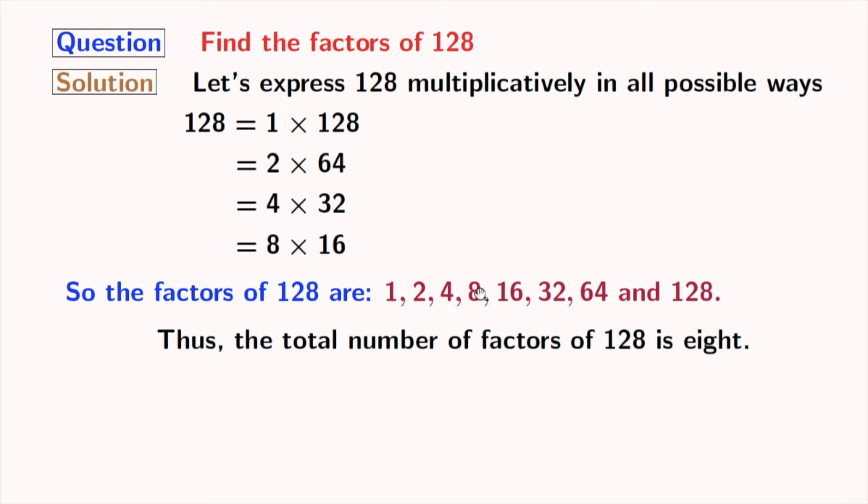Now, if we look at these factors, we can see that 2 among these numbers is a prime number because this number does not have any divisor other than 1 and that number itself. So, we can say that the only prime factor of 128 is 2.